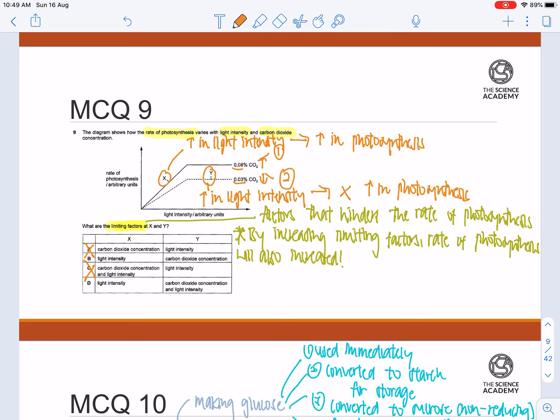However, at point Y, even if I were to increase light intensity even more, there will be no chance of increasing my rate of photosynthesis further. This shows that light intensity is not the limiting factor, whereas carbon dioxide is the limiting factor. Should I increase carbon dioxide at point Y, then can I increase the rate of photosynthesis?